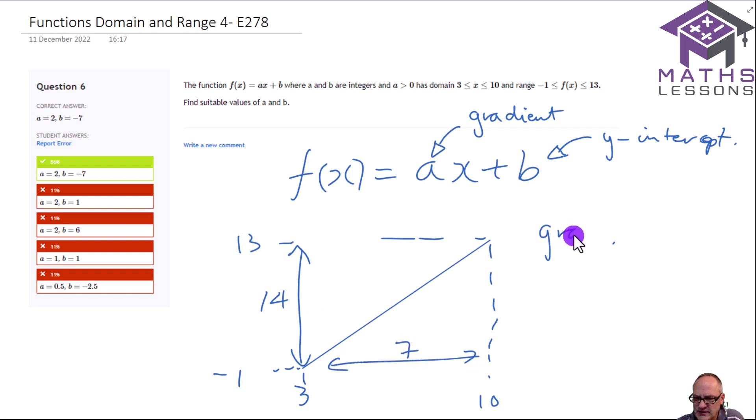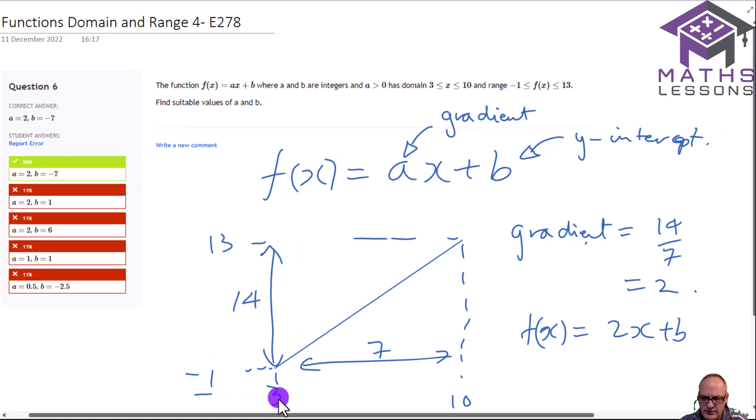So therefore the gradient will equal 14 over 7, which equals 2. So we know that f of x equals 2x plus something to be found. Now we also know two coordinates. We've got minus 1 and 3, and we've got 13 and 10. If we know we've got minus 1 and 3, which is actually the coordinate 3 comma minus 1, so the x value is 3 when the y value is minus 1.